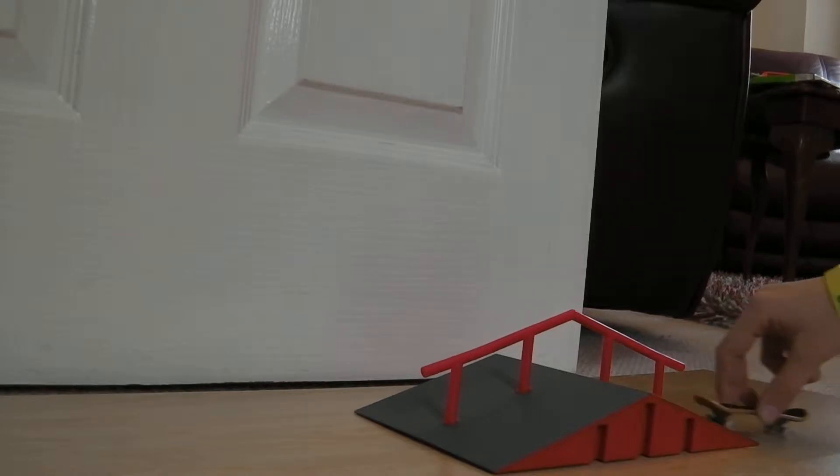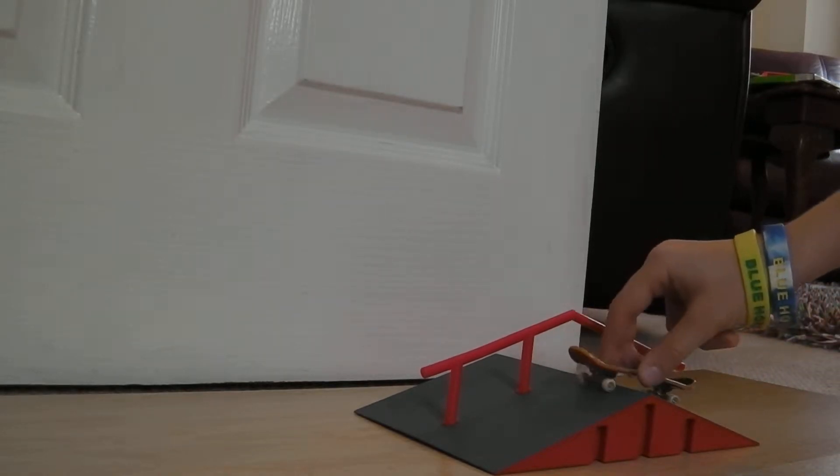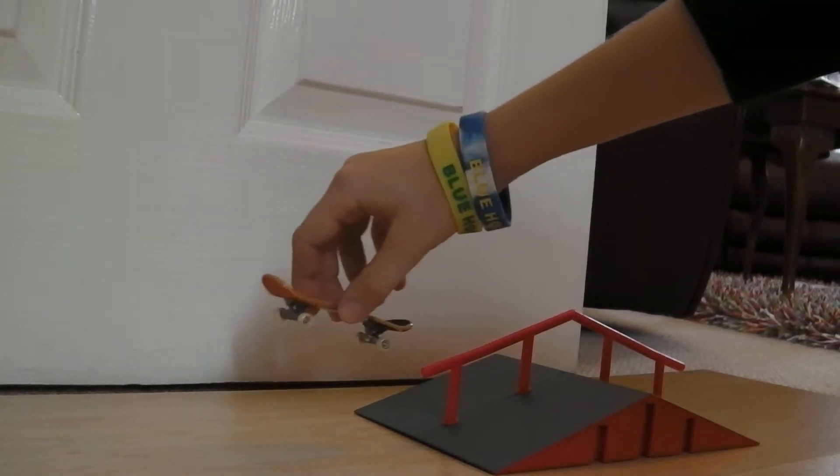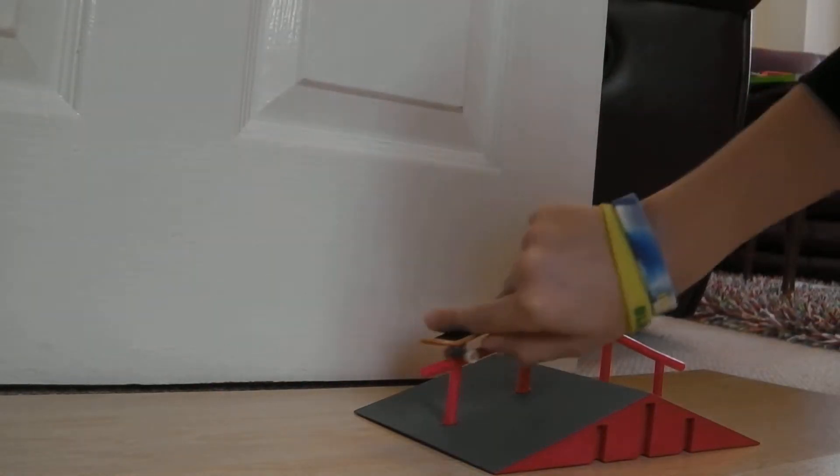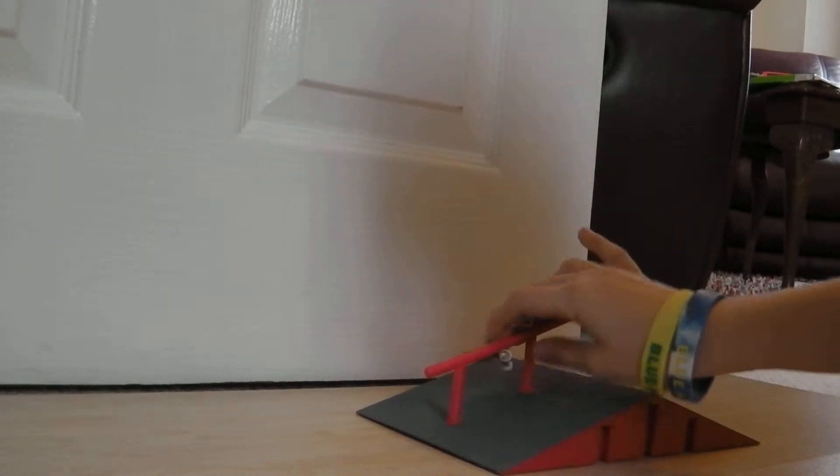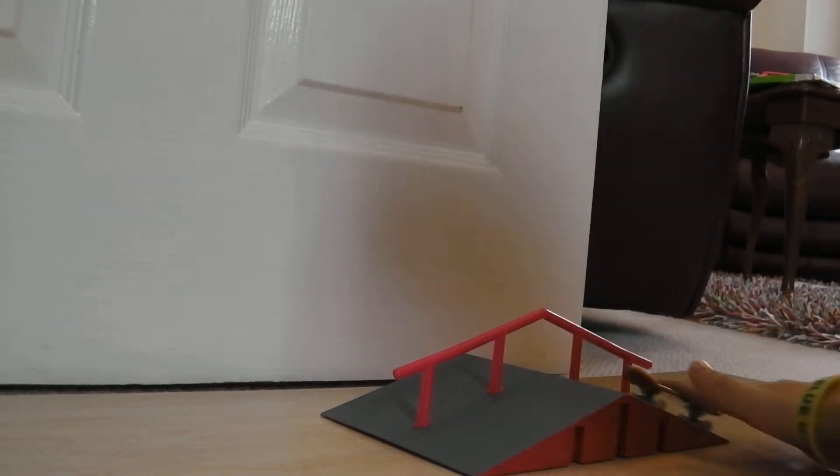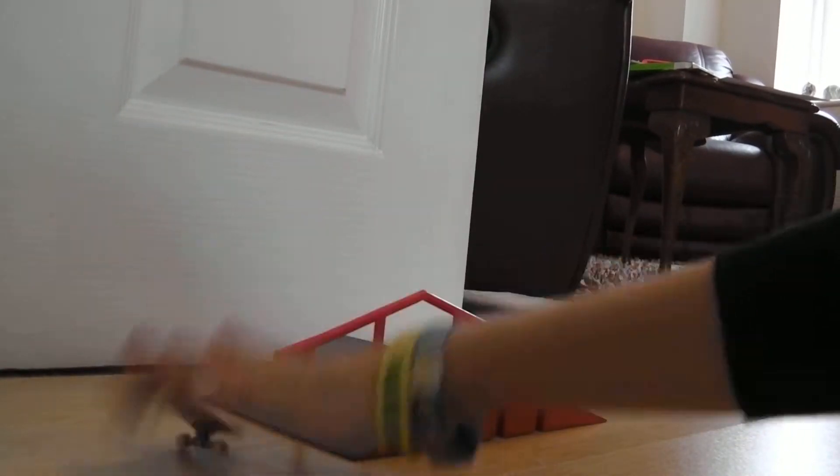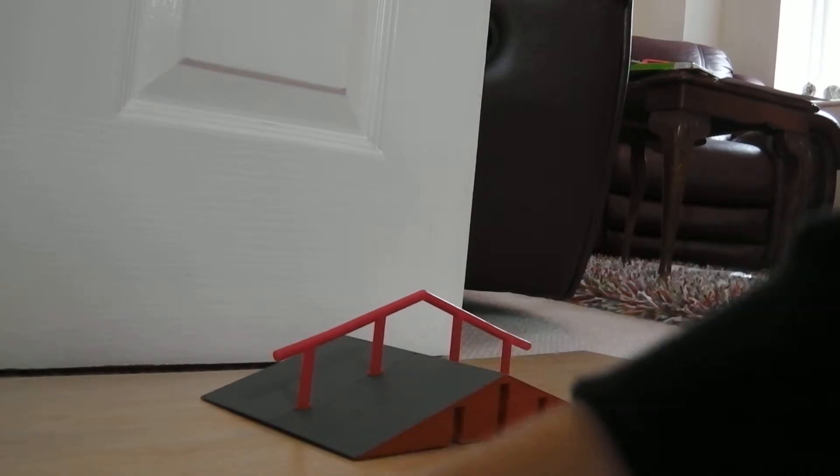First, the easy 50-50. Right up to the rail, ollie, land both trucks on, grind down, ollie, or just ride off. Now, this grind may look easy, but it actually isn't. So that's the 50-50.